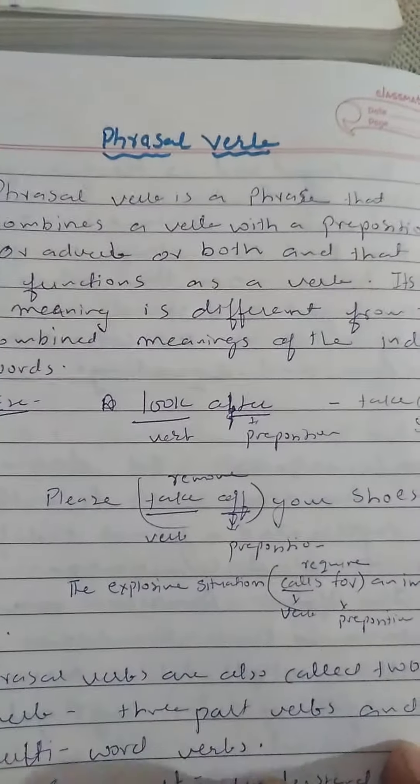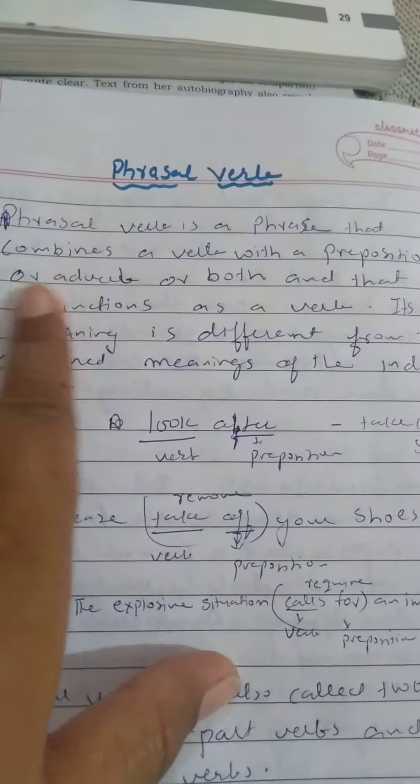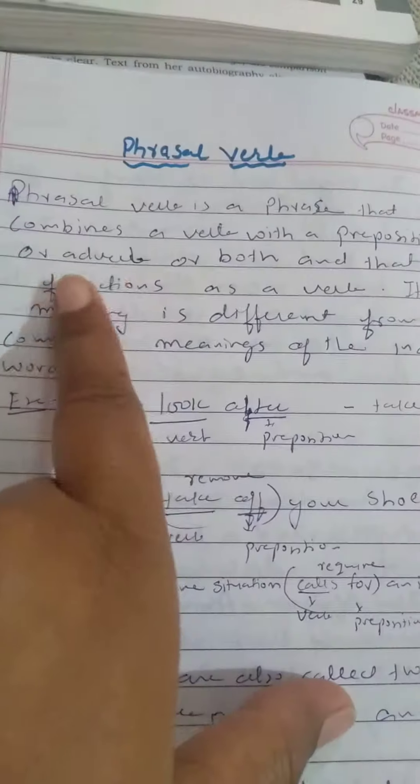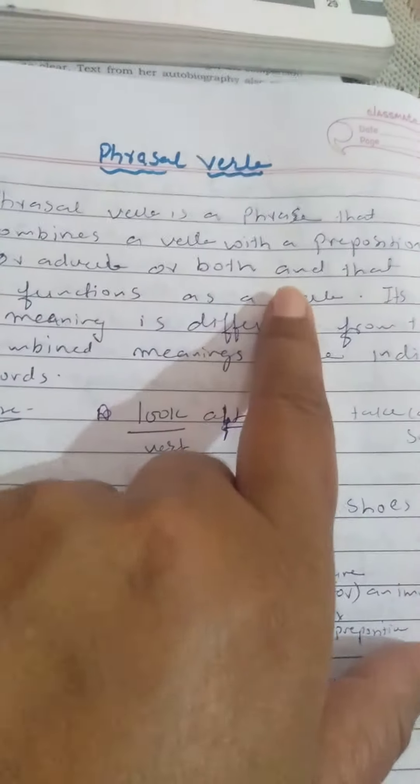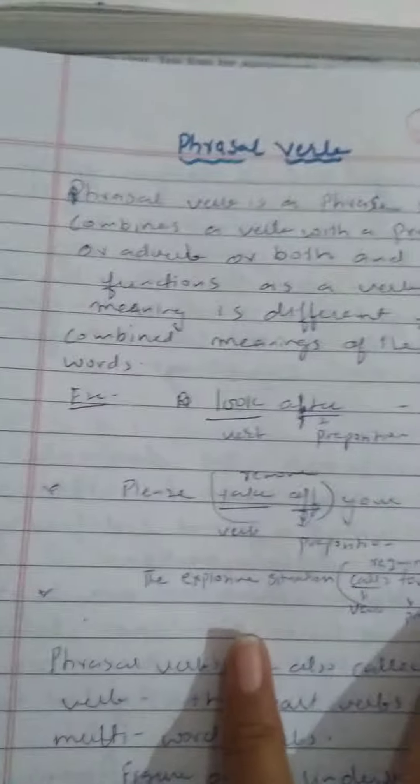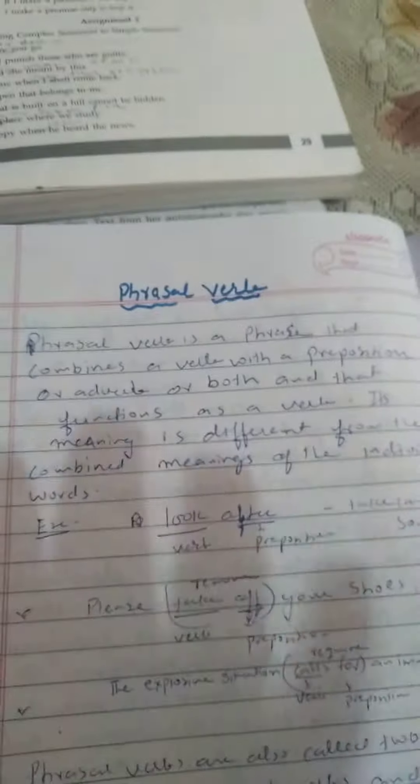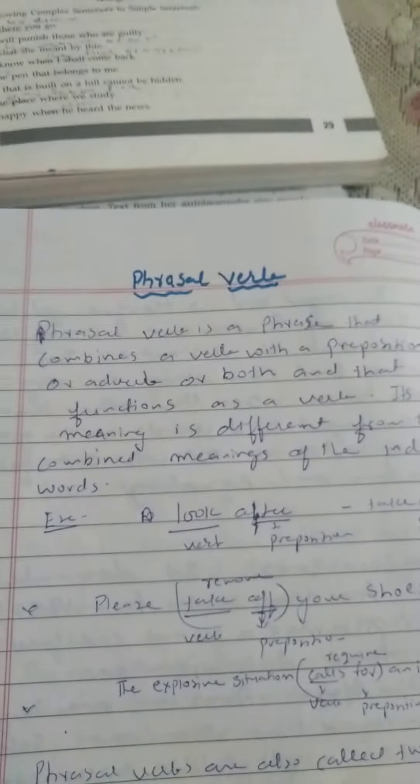Phrasal verb is a phrase, or we can say a word, that combines a verb with a preposition or adverb or both, and that functions as a verb.